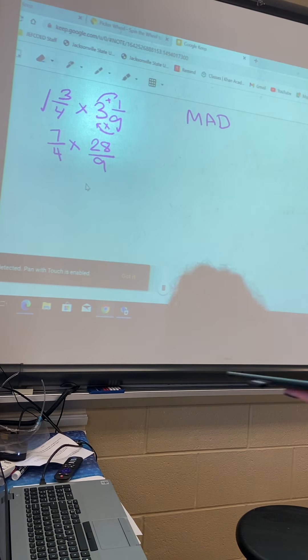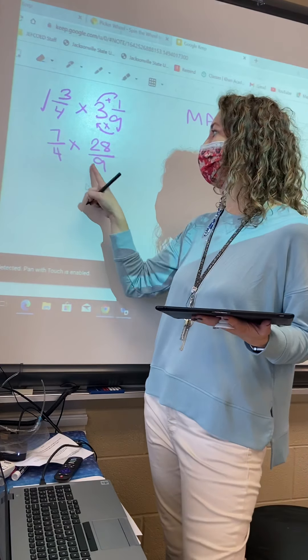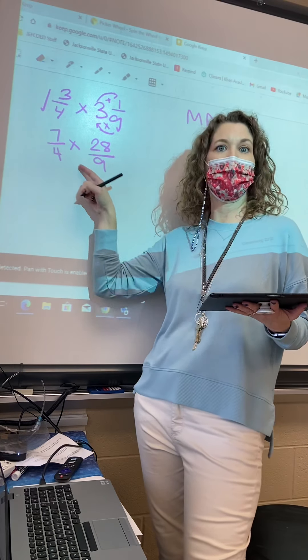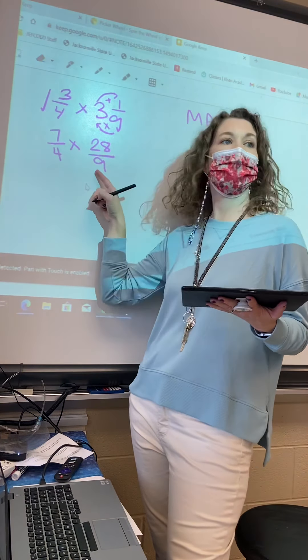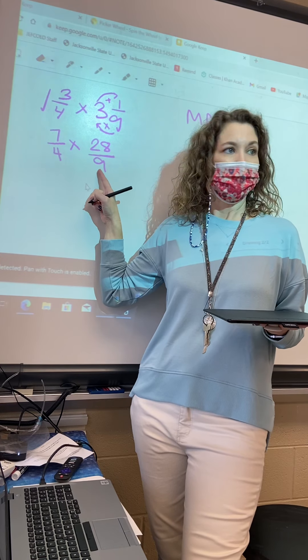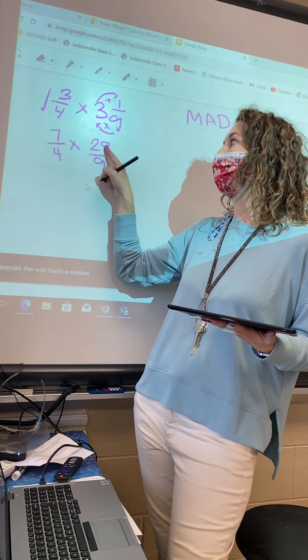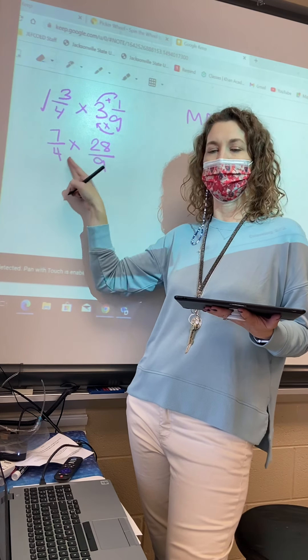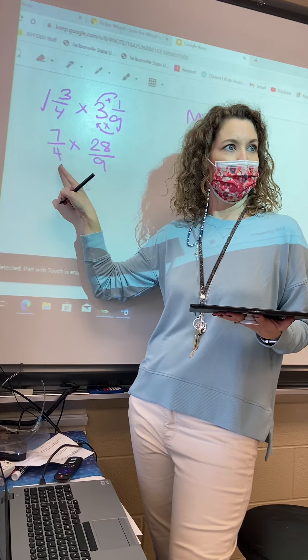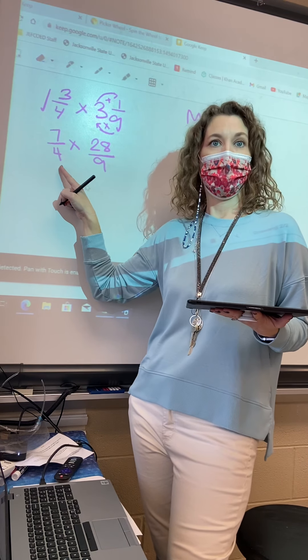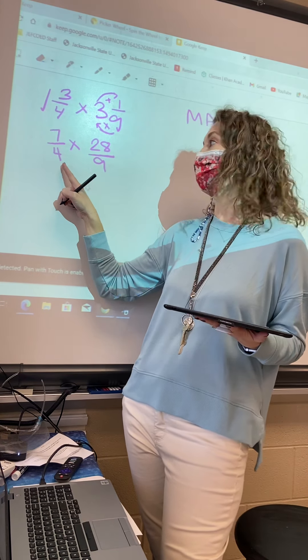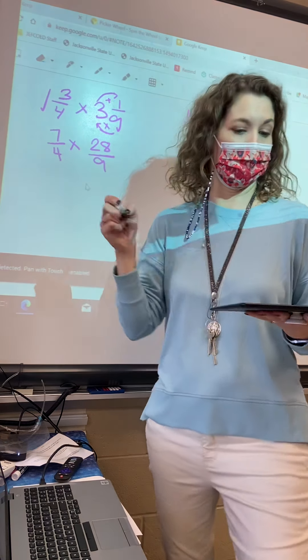So now, look at your seesaw, friends. Okay, look at 7 and 9. They would be on the same seesaw. 7 and 9, do they have anything in common? No. So you can't simplify anything. What about 4 and 28? Those are seesaw friends. What do they have in common? 4. They have 4 in common.